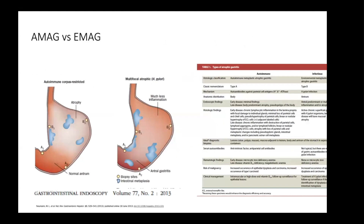When we compare autoimmune gastritis with environmental gastritis, there are striking differences, not only in distribution. Autoimmune gastritis classically involves the fundus and body, though in late stages it could involve the antrum. Patients with autoimmune gastritis can also be infected with H. pylori, which can make things more difficult to discern. Classically, H. pylori or environmental gastritis is multifocal and involves the antrum.